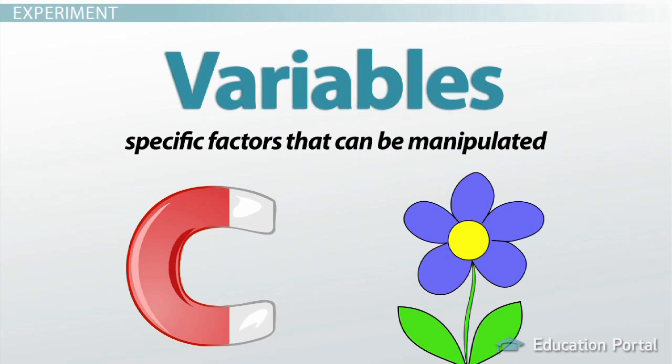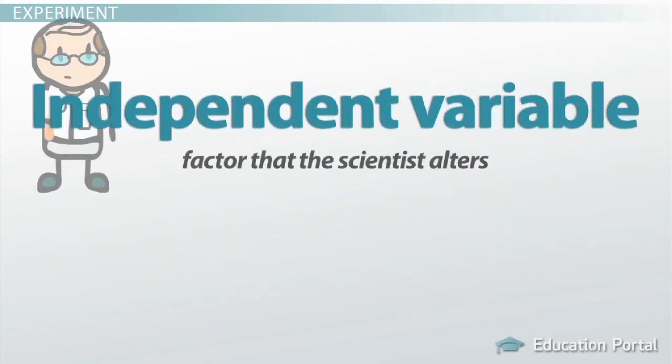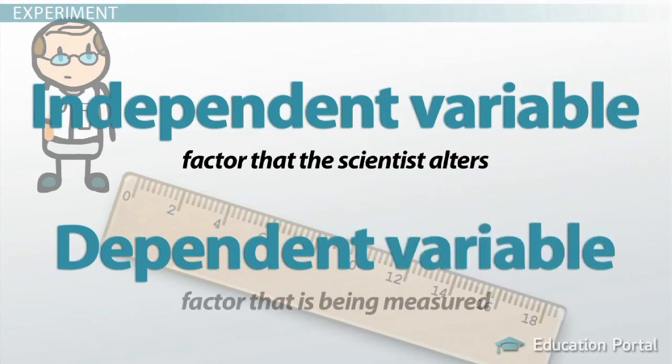Most experiments include an independent variable, which is the factor that the scientist alters, and a dependent variable, which is the factor that is being measured.